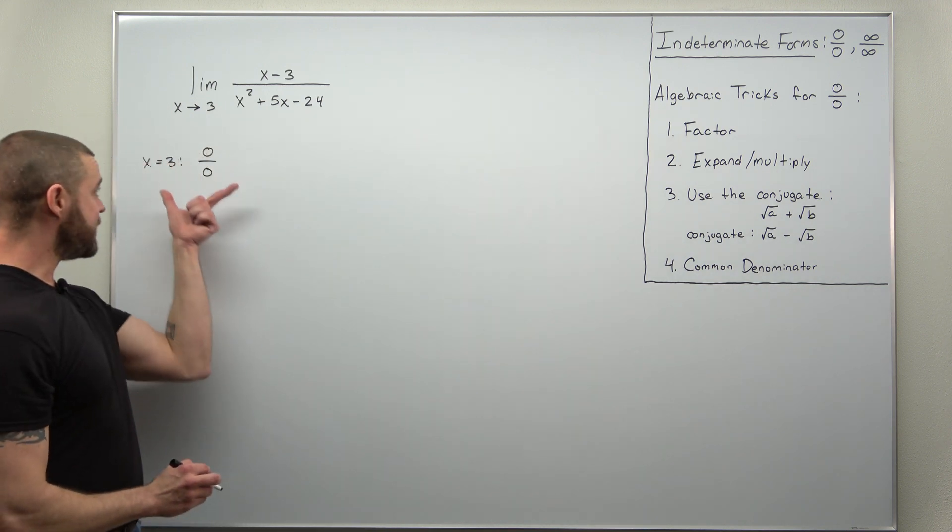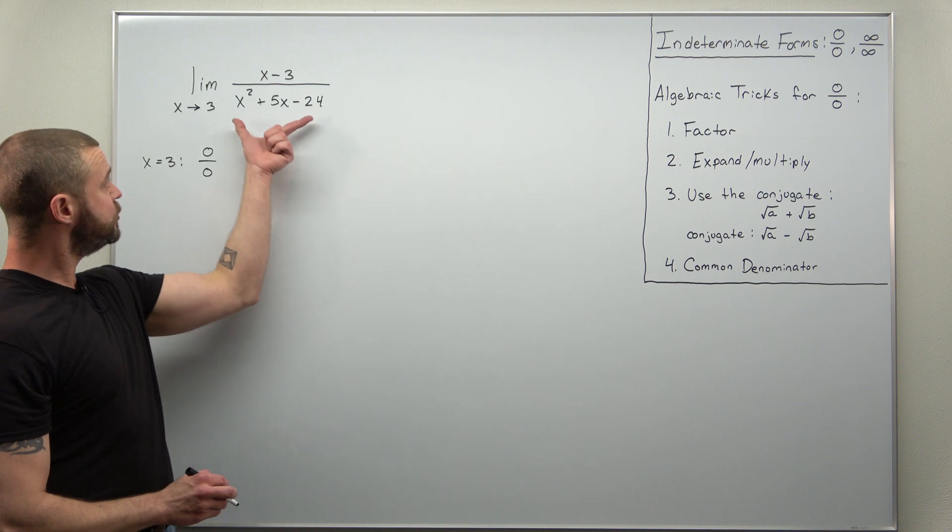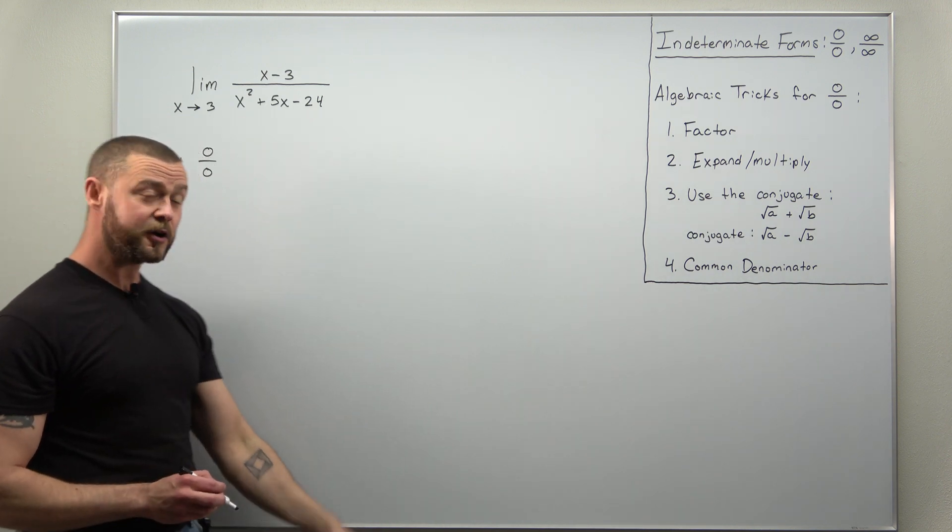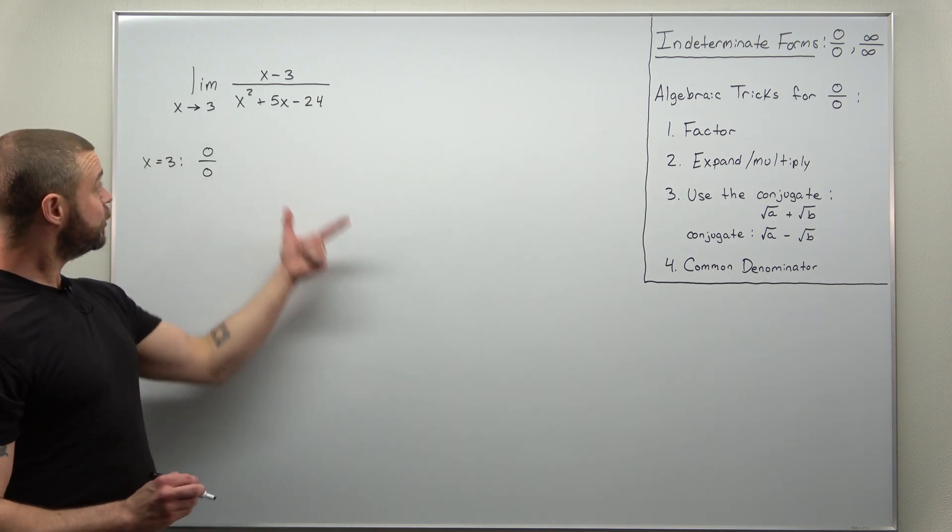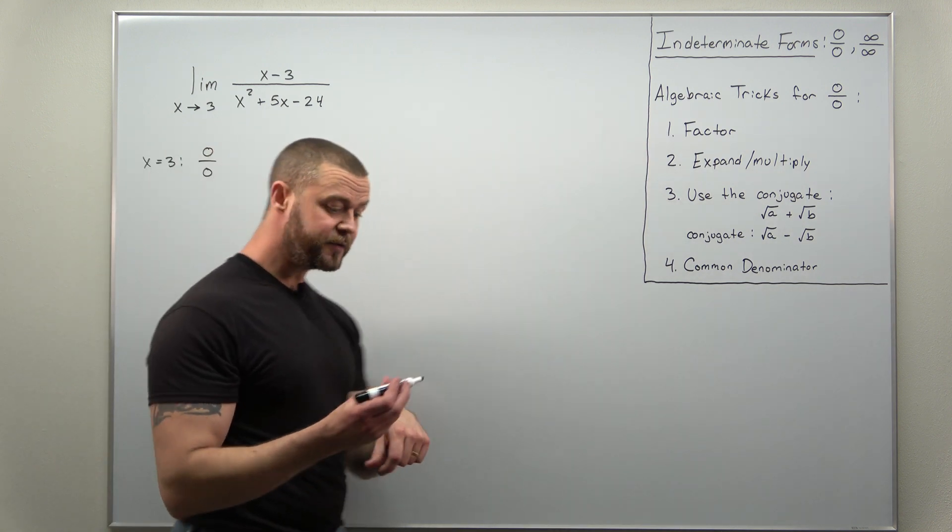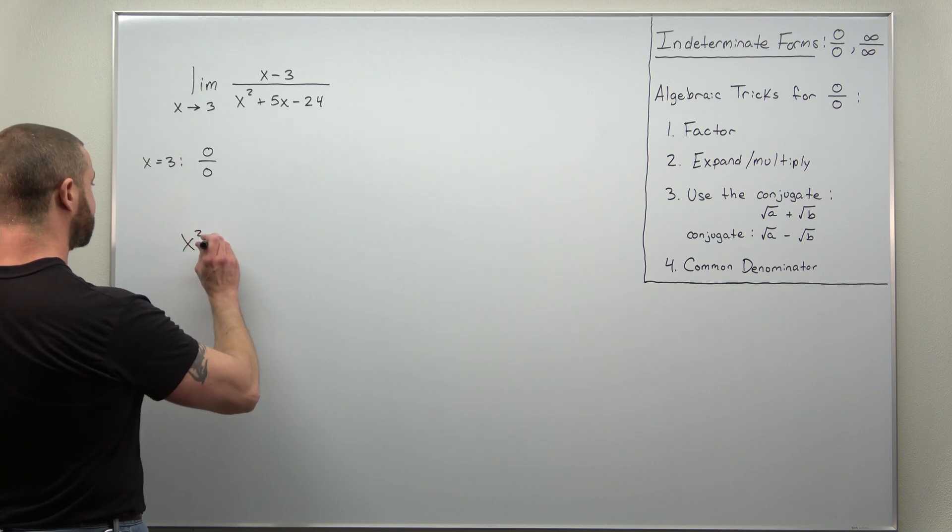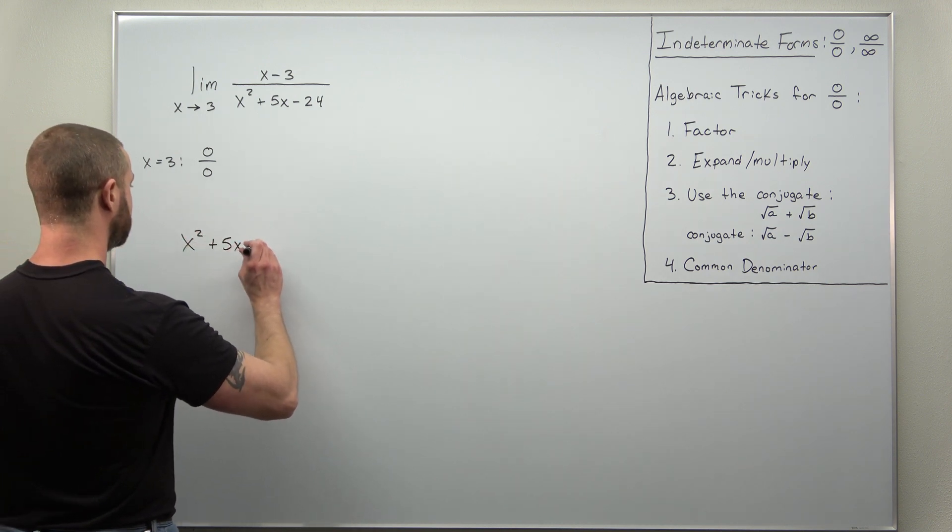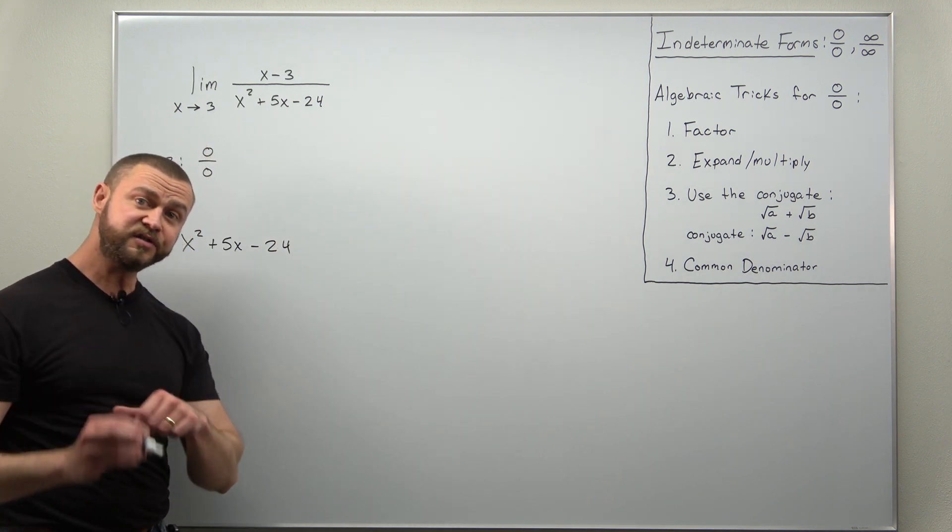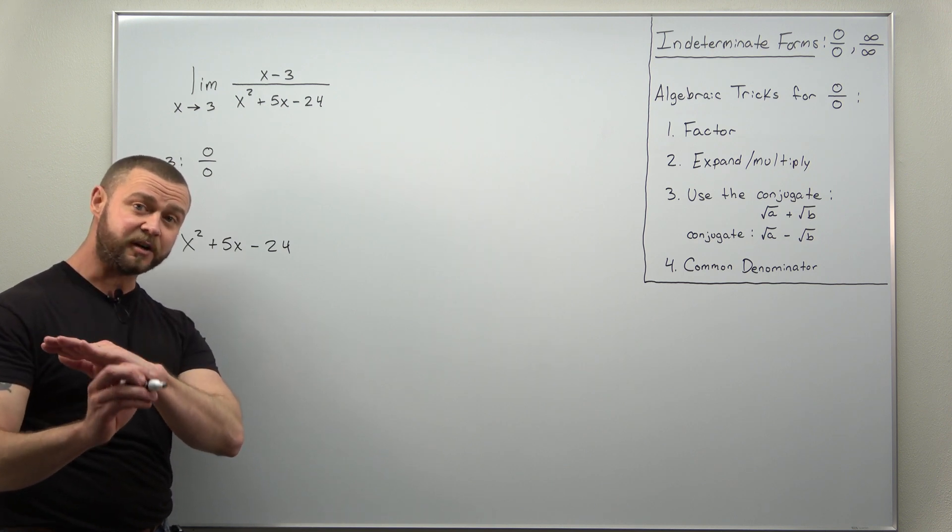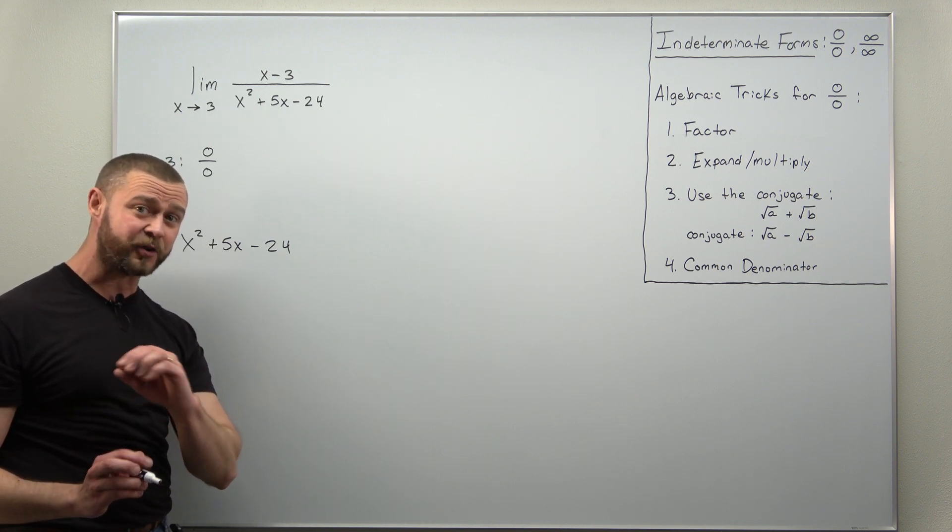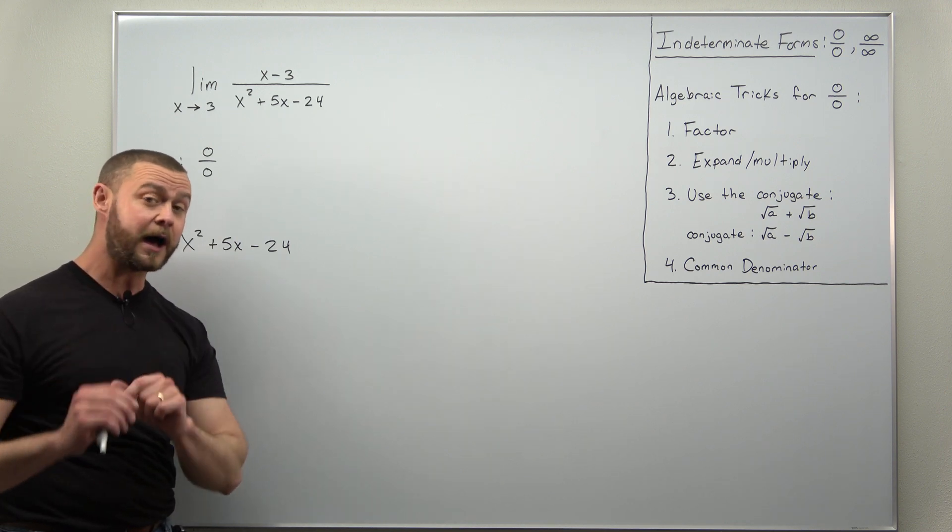All right now this tells us that we have an indeterminate form and we're going to try to do an algebraic trick here to eliminate the indeterminate form. And here the one that hopefully is obvious, the only thing that you can really do with that expression is maybe try to factor it. So let's factor the denominator x squared plus 5x minus 24. And as it turns out factoring is one of the biggest skills that either allows a calc one student to do well or if that student is a little bit weak in factoring it's going to hold them back. So make sure you're on top of factoring.